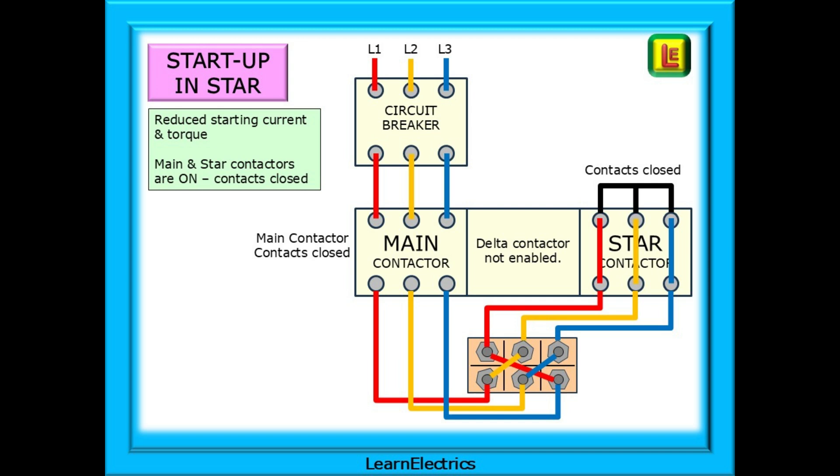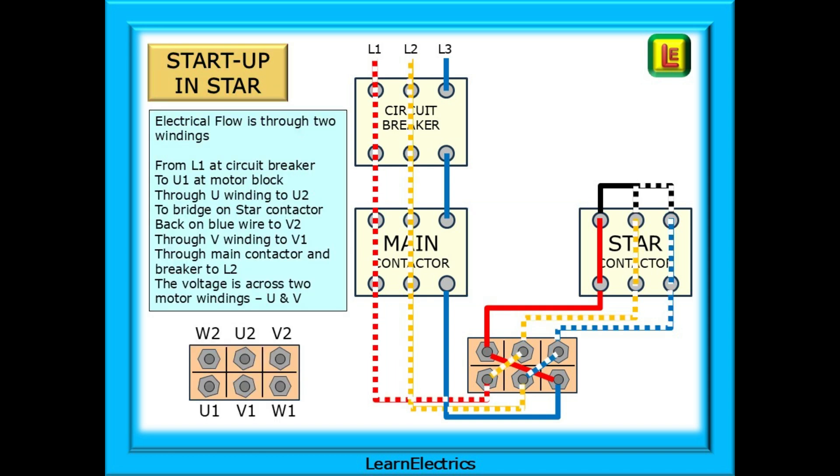Let's start up the motor in star configuration. This will give a reduced starting current and torque. The main and star contactors are on. The contacts are closed. The delta contactor has not been enabled and takes no part in the startup. Electrical flow is through two windings in series at startup. From L1 at the circuit breaker to terminal U1 at the motor block, then through the U winding inside the motor to terminal U2, then to the bridge on the star contactor and back along the blue wire to terminal V2. Now through the V winding to terminal V1, and then through the main contactor and breaker to L2. In star configuration, the supply voltage is across two windings, U and V in this example.